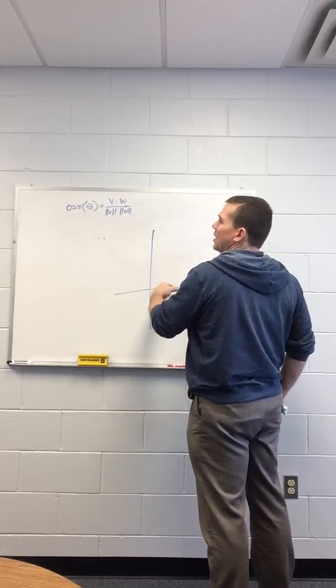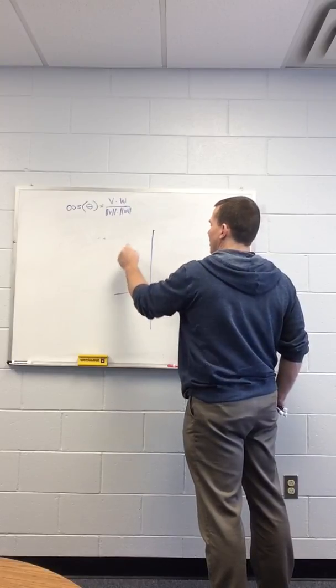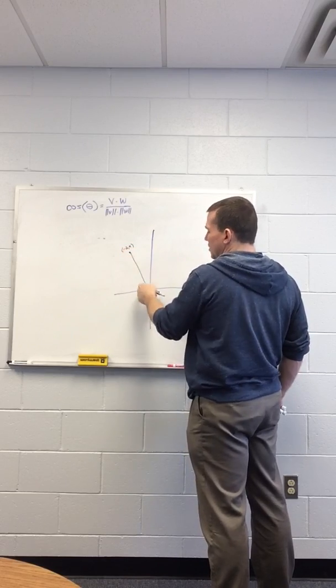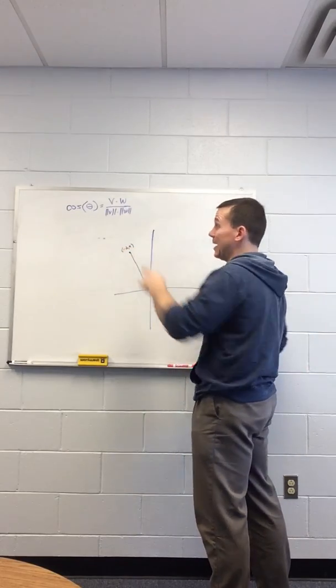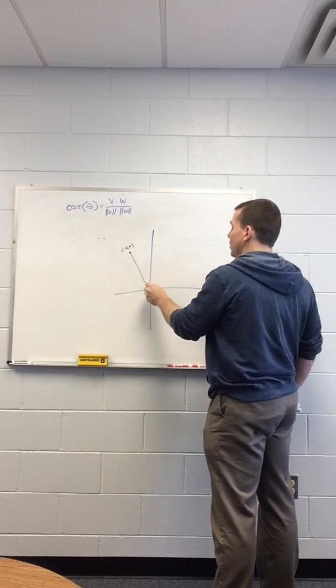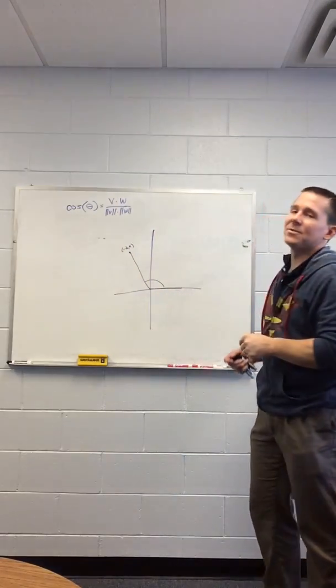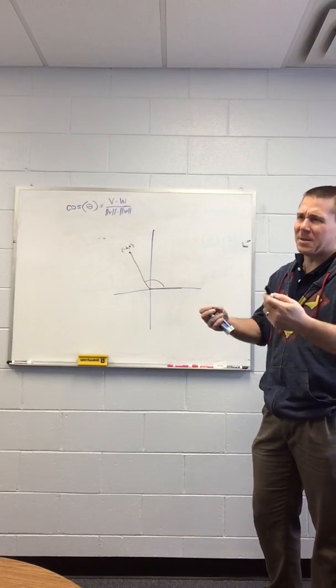The vector we just did over here was negative 2, 4. And when we drew our triangle, we used the reference angle and found the reference angle here. This formula uses angles from the horizontal, which means you have to use that right there. So just be aware of that.